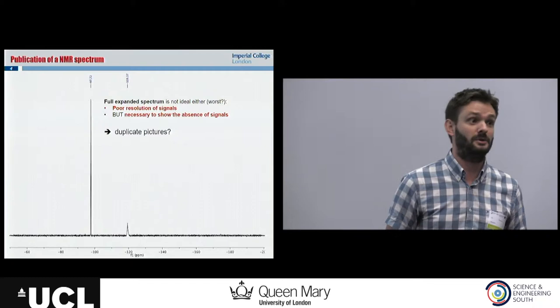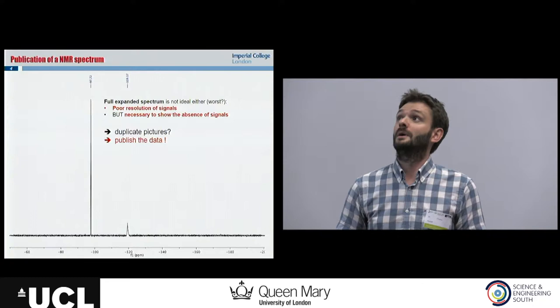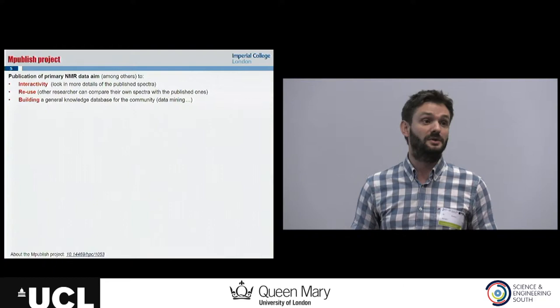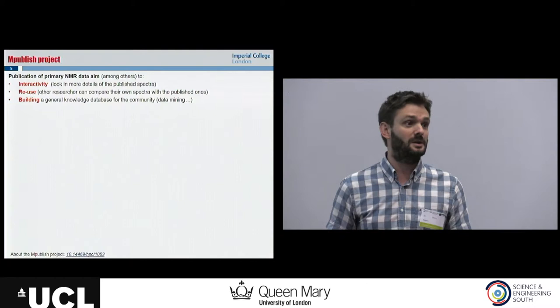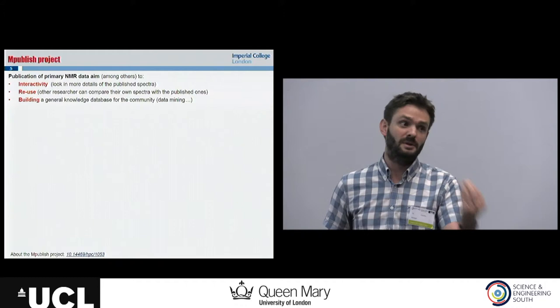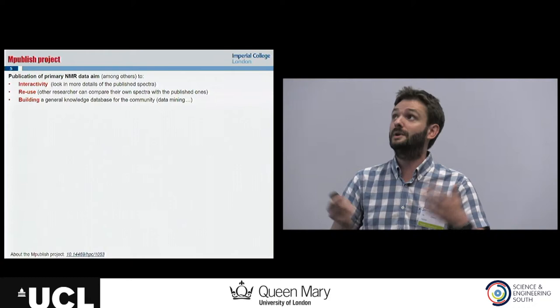That's why the solution could be to publish the data directly. How do we do it? So, while publishing NMR data, a quick overview for interactivity — if we want to look at more detail in the spectrum. For reuse, especially in synthetic chemistry, most of the time we redo something that has been done before. When I make a molecule that has been done before, I'm very happy if I can download the data and compare with mine, and also to build a general database for the community.